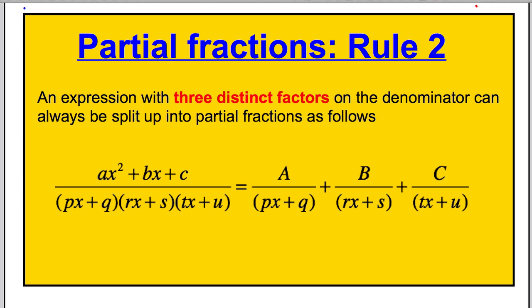Okay, so here's the rule that you need for partial fractions. An expression with three distinct linear factors on the denominator can always be split up into partial fractions as follows. If you have an expression of this form, you can write it as a number over the first linear factor plus another number over the second linear factor plus another number over the third linear factor, and those numbers you need to determine in these type of questions.